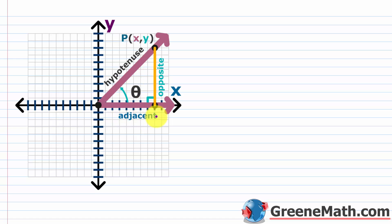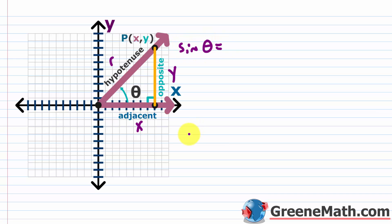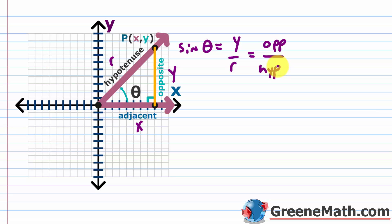This side right here is adjacent to angle theta. The hypotenuse stays the same — it's always opposite the right angle, your 90-degree angle. So since y was the opposite, x was the adjacent, and r was the hypotenuse, we can rewrite: sine of theta is opposite over hypotenuse.